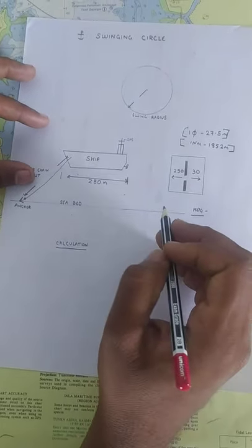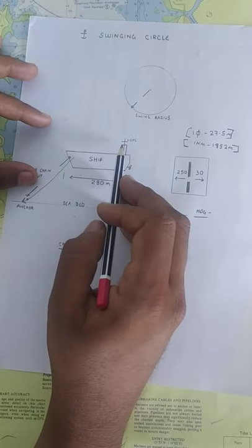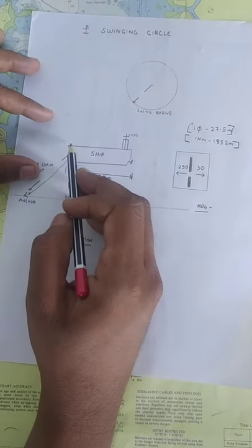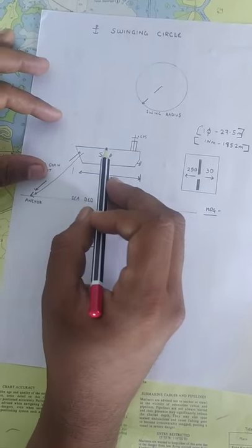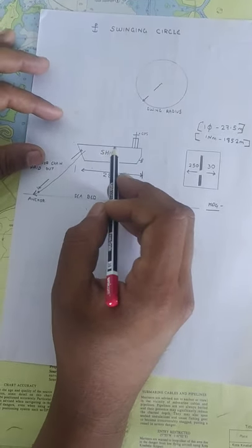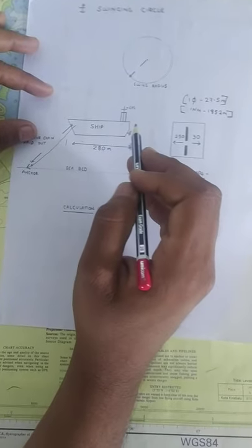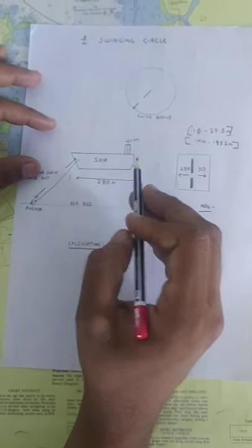But before you do that, always remember, the GPS is situated not at the forward of the ship. Of course, there are ships that have GPS at the forward with the bridge being at the forward. I am basically speaking about a conventional ship.